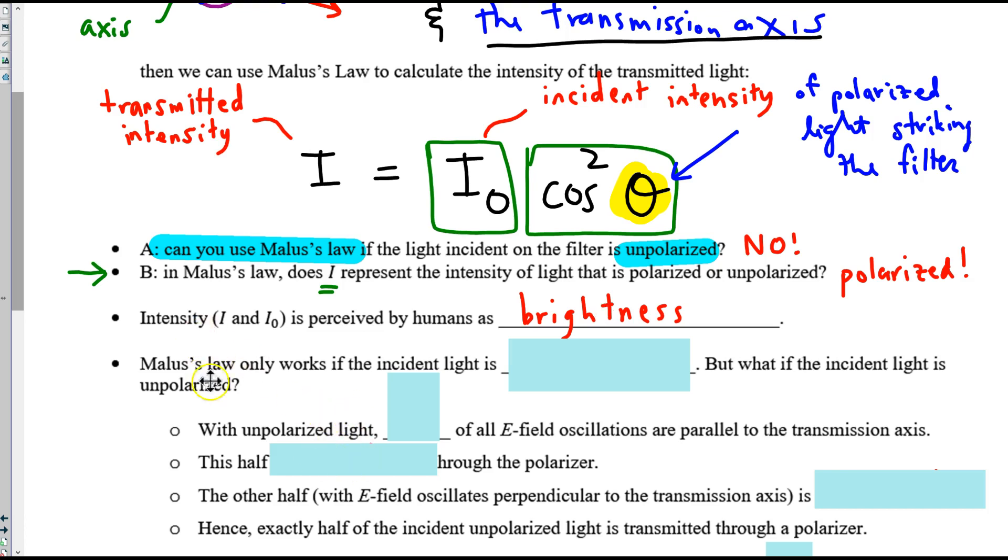Malus's law here only works, we said, if the incident light is polarized. So, what if that's not the case? When you're dealing with unpolarized light striking a filter, remember that all directions are represented. Half, then, would be parallel to the transmission axis.